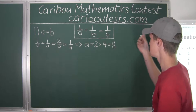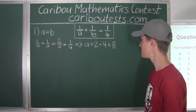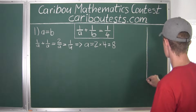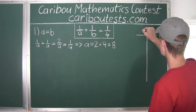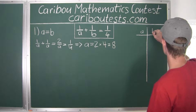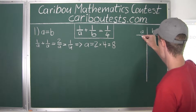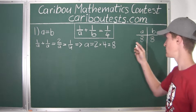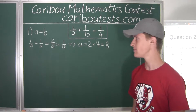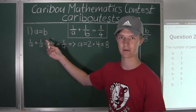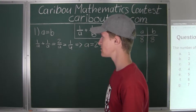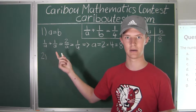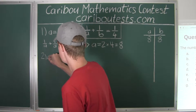Now we'll make a table for the pairs (a, b). We have (8, 8), which counts as one pair. This was the first case. Now let's consider the second case where a is not equal to b, so we will say that a is less than b.